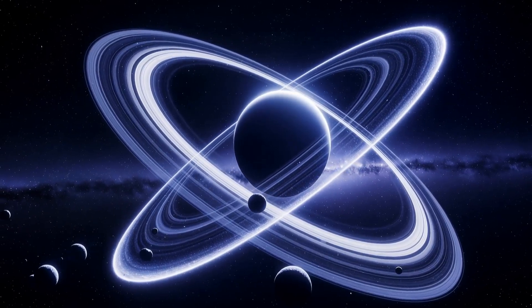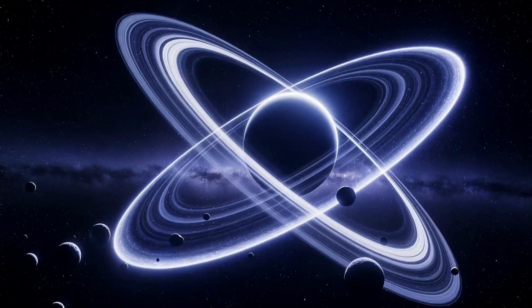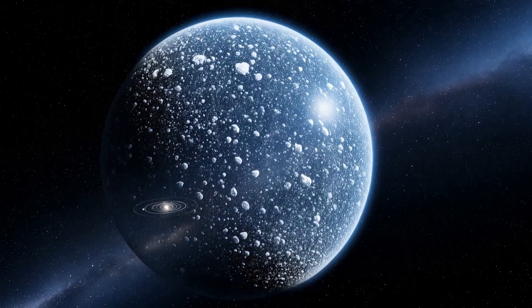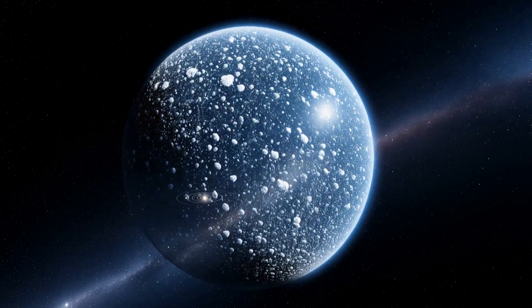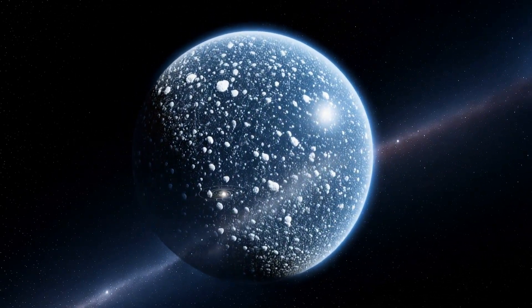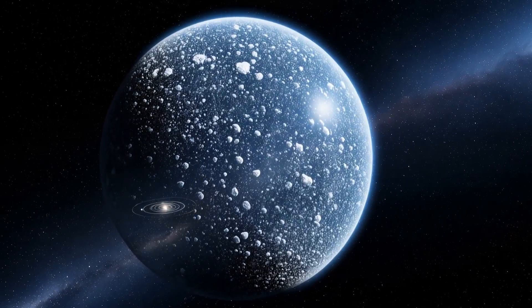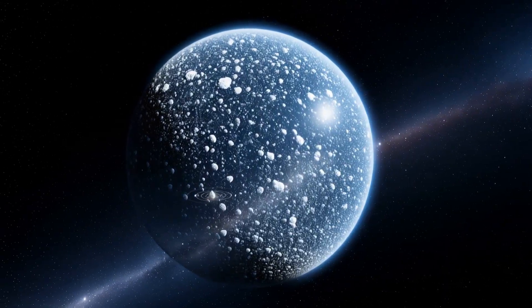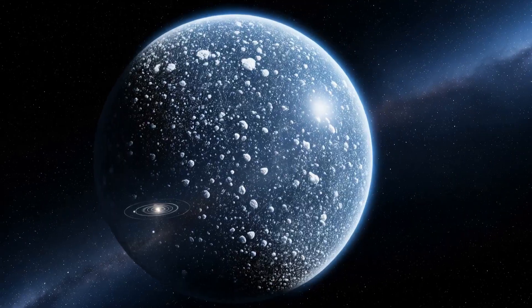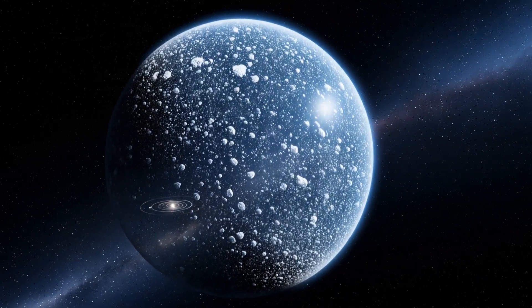And far beyond the Kuiper Belt lies an even more enigmatic realm, the Oort Cloud. It's not a belt but a theoretical colossal sphere of trillions of icy bodies thought to surround our entire solar system, reaching out almost a light year into space. We've never seen it directly, but we infer its existence because it's the source of the long-period comets that sometimes fall toward the Sun.